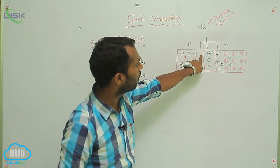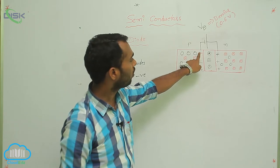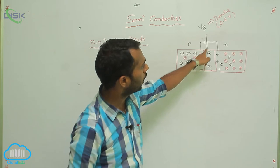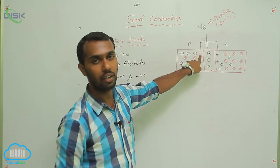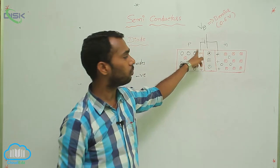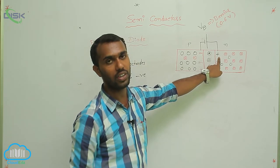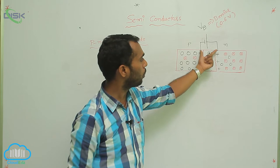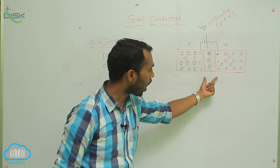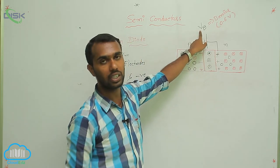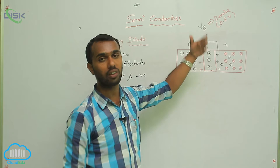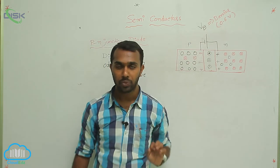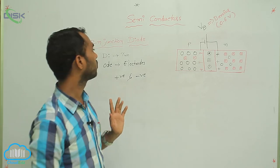Why is negative charge forming on this side? Because this hole is diffusing towards the N-region. Whenever a hole is going, the vacant space left behind forms a negative region. Positive region forms on the other side. Automatically, negative charge and positive charge are separated by a narrow region, which gives a potential. That potential stops further diffusion of holes and electrons — that's why it is called barrier potential.